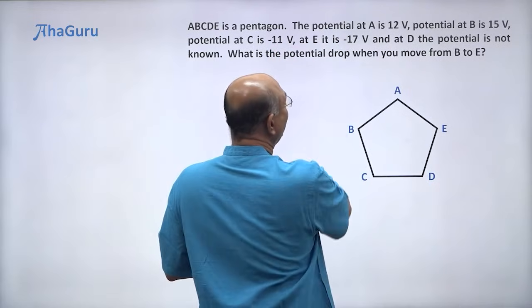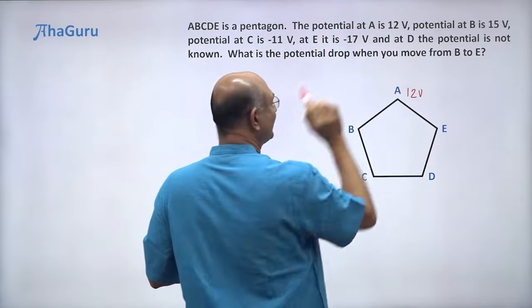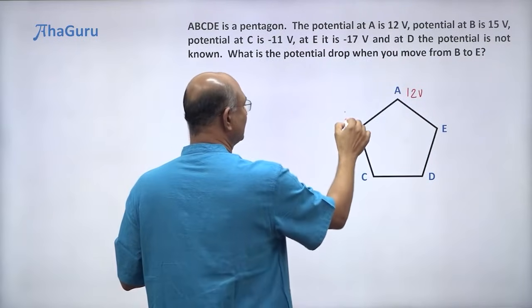The potential at A is 12 volts. So here I am going to put all the numbers. This is 12 volts.